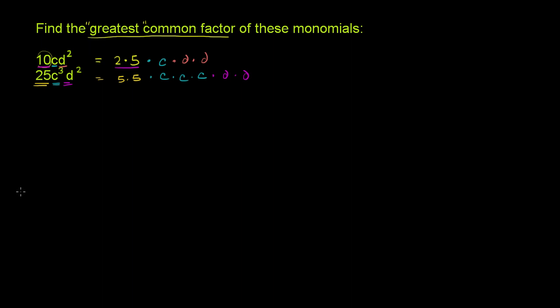So what's their greatest common factor in this context? Well, they both have at least one 5. Then they both have at least one c over here. So let's just take one of the c's right over there. And then they both have 2 d's.